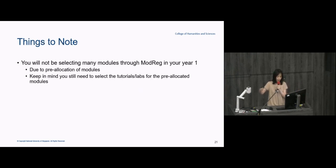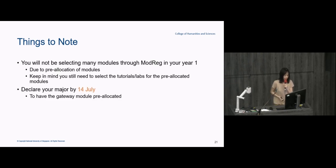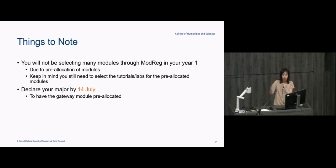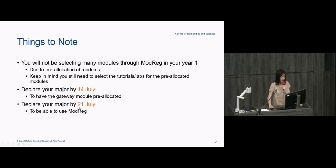Before talking about how ModRec works, a few things to note. You're not going to be selecting many modules in your first year because of the pre-allocation. But even though modules are pre-allocated to you, you still have to select tutorials for those modules on ModRec by yourself. And remember: if you want your gateway module pre-allocated, declare your major on the Academic Plan Declaration system by July 14th. If you miss that deadline, declare your major by July 21st so you can participate in ModRec.